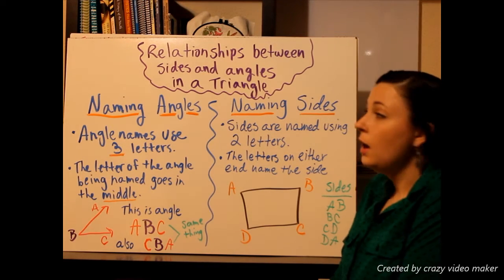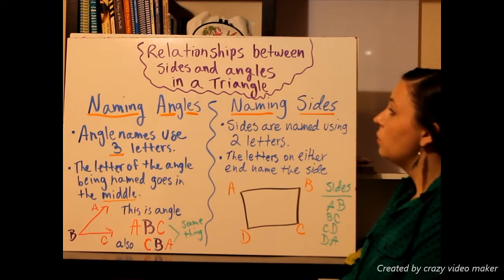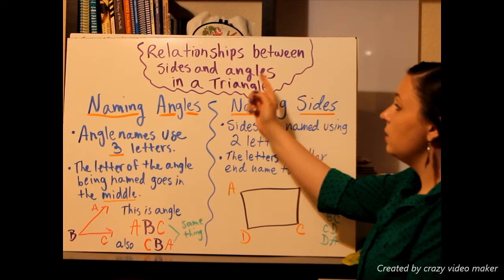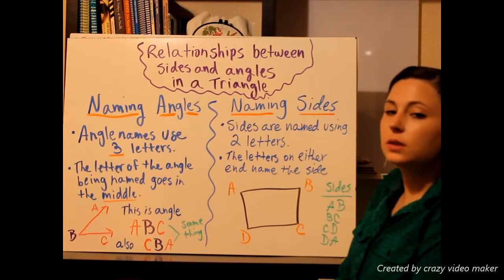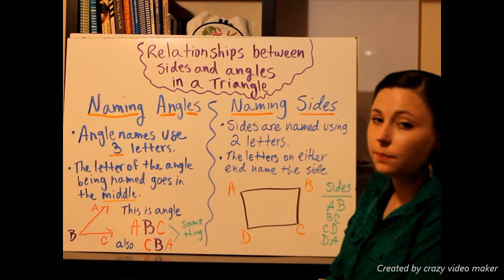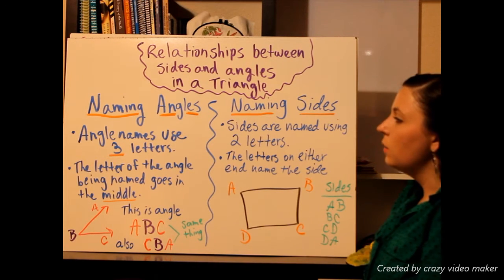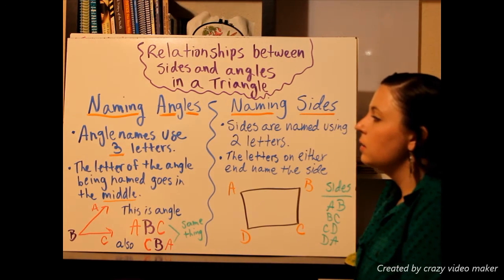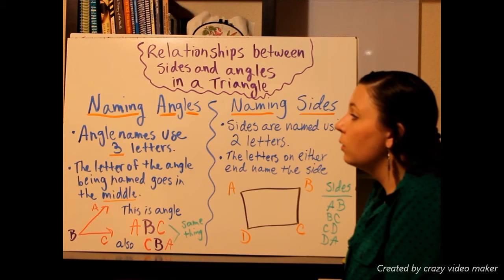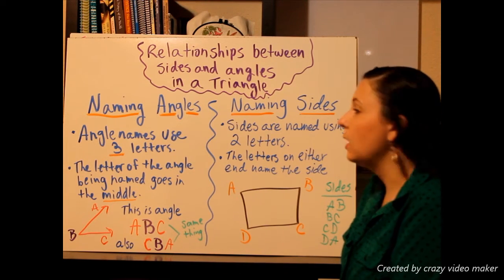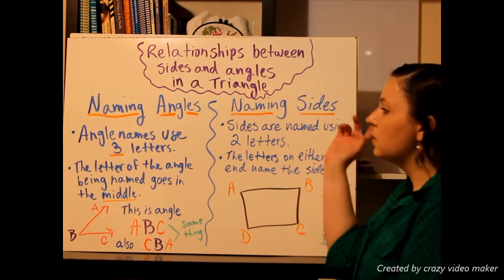Today we're going to be learning how to find relationships between sides and angles in a triangle. First thing we have to start with is how we are going to name angles and name sides.